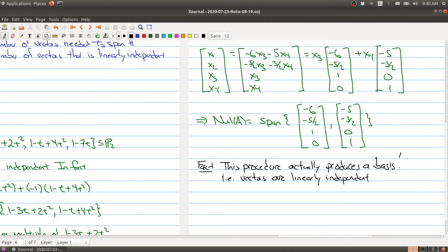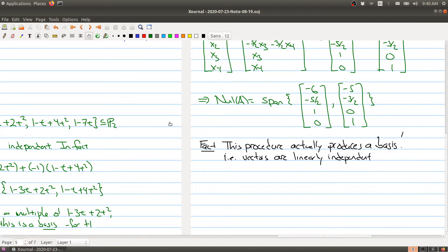Let me explain why this is always going to be true using this particular example. It has to do with the free variables. If you look at what's happening here, let's say you're trying to look for a linear combination of these two vectors.